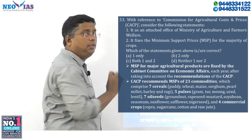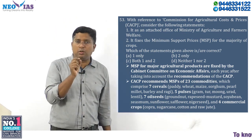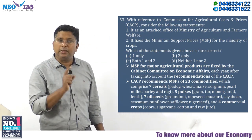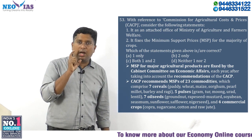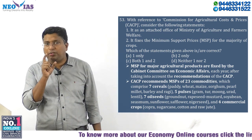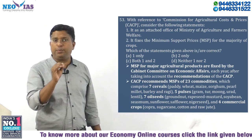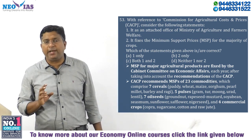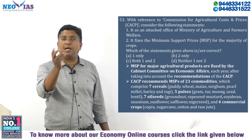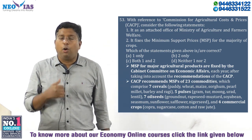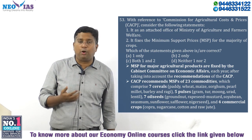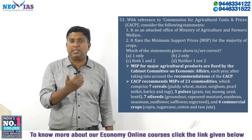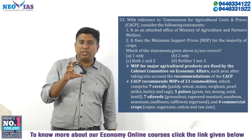This question is on CACP, the Commission for Agricultural Cost and Prices. In our explanation, we have discussed the important 23 crops. This is a favorite area for UPSC — they generally ask which crops have MSP provided, what is the total number of crops covered, who recommends MSP, or who approves it.